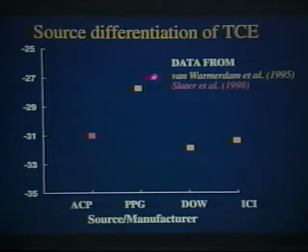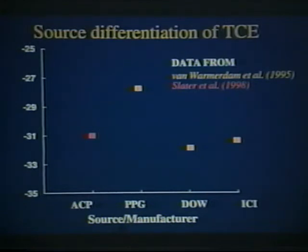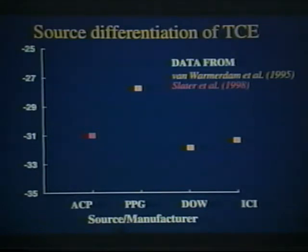The first work taking this approach was carried out by Liz Van Warmerdam at the University of Waterloo in 1995. She obtained aliquots of free product TCE from three different manufacturers, and I plot here as well results in orange from the University of Toronto, with the delta C-13 signature on the y-axis. The take-home point is a very simple but very important one: there are distinct differences in delta C-13 signature for free product coming from different sources or manufacturers, so the potential is there to use stable carbon isotopes to distinguish between these various sources of contamination.